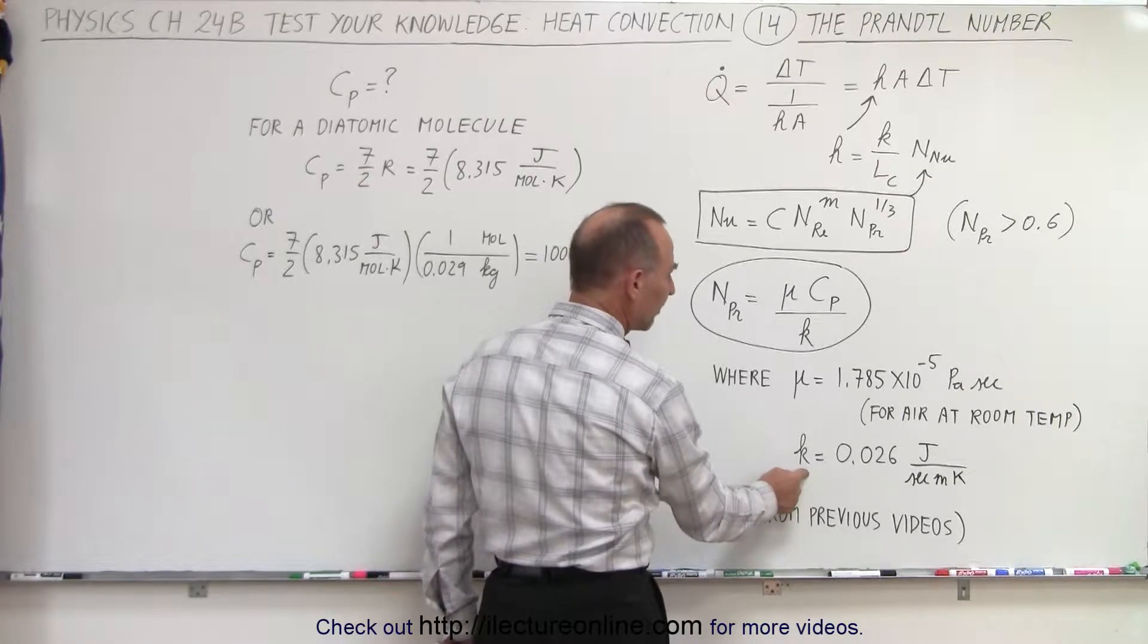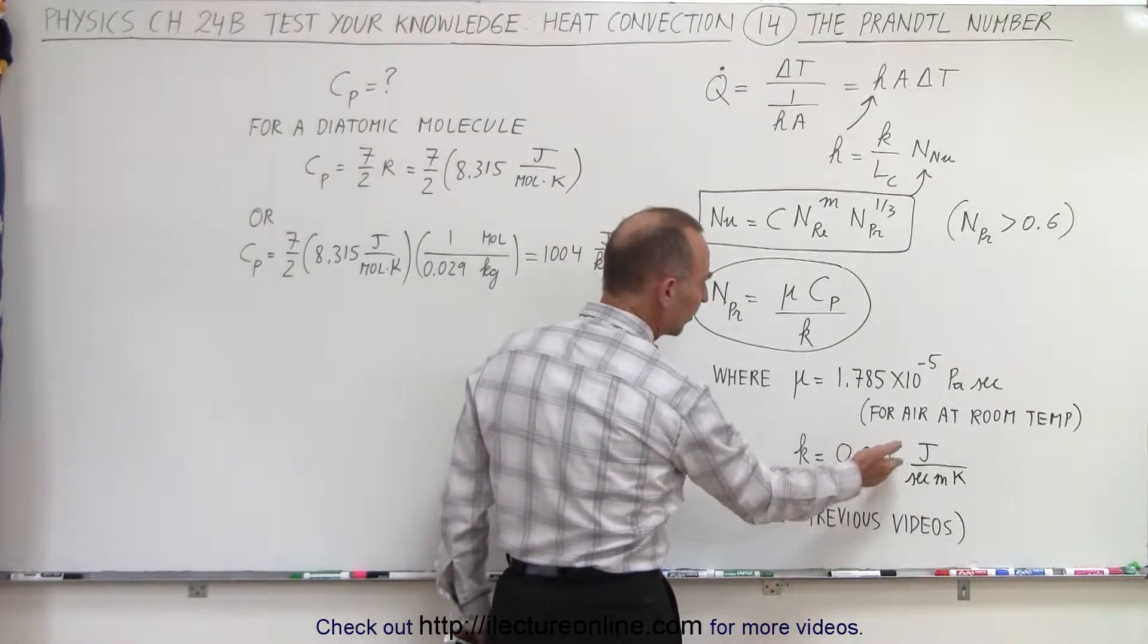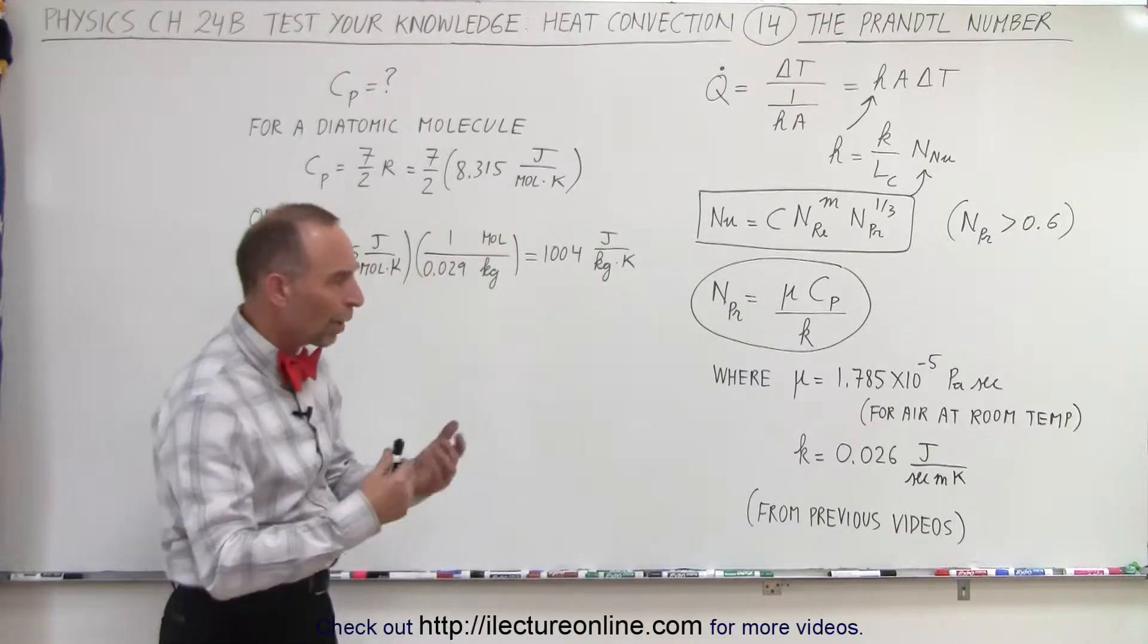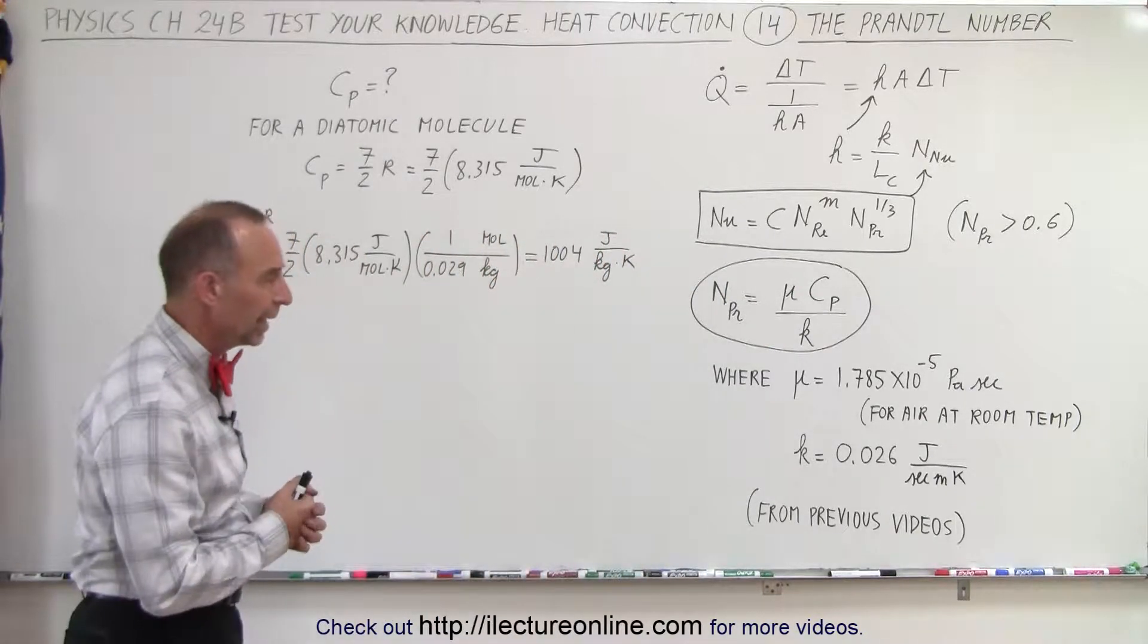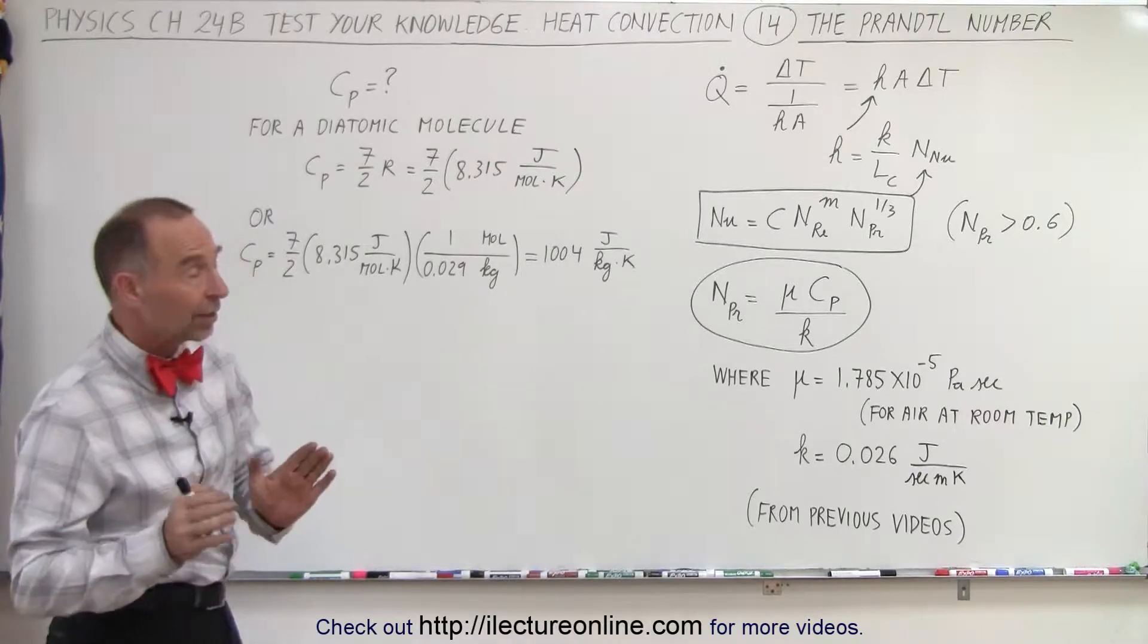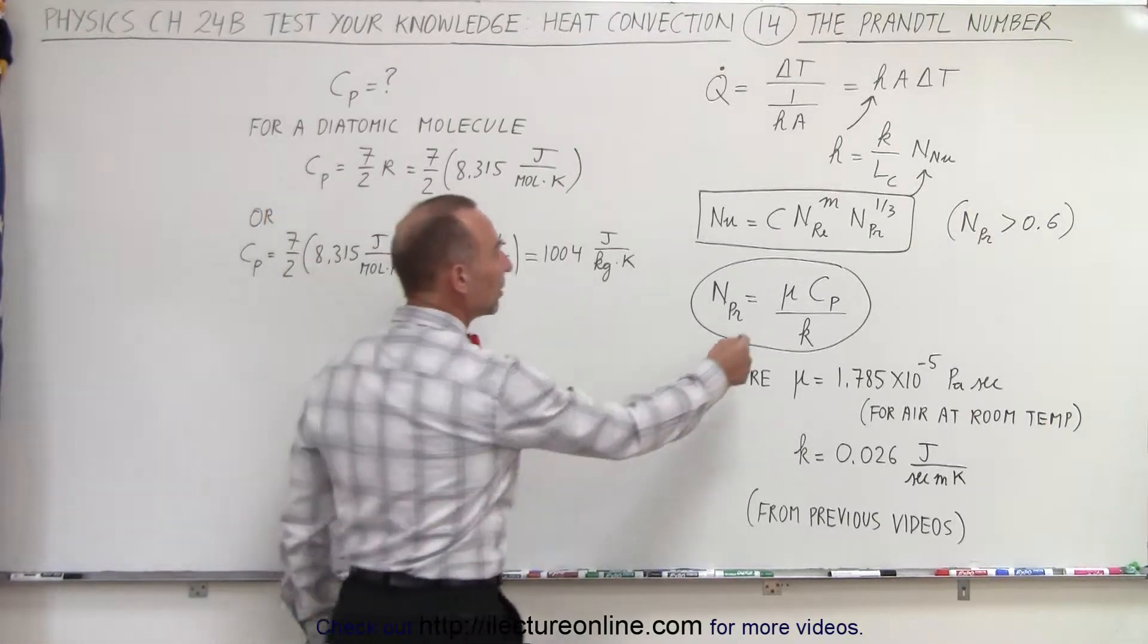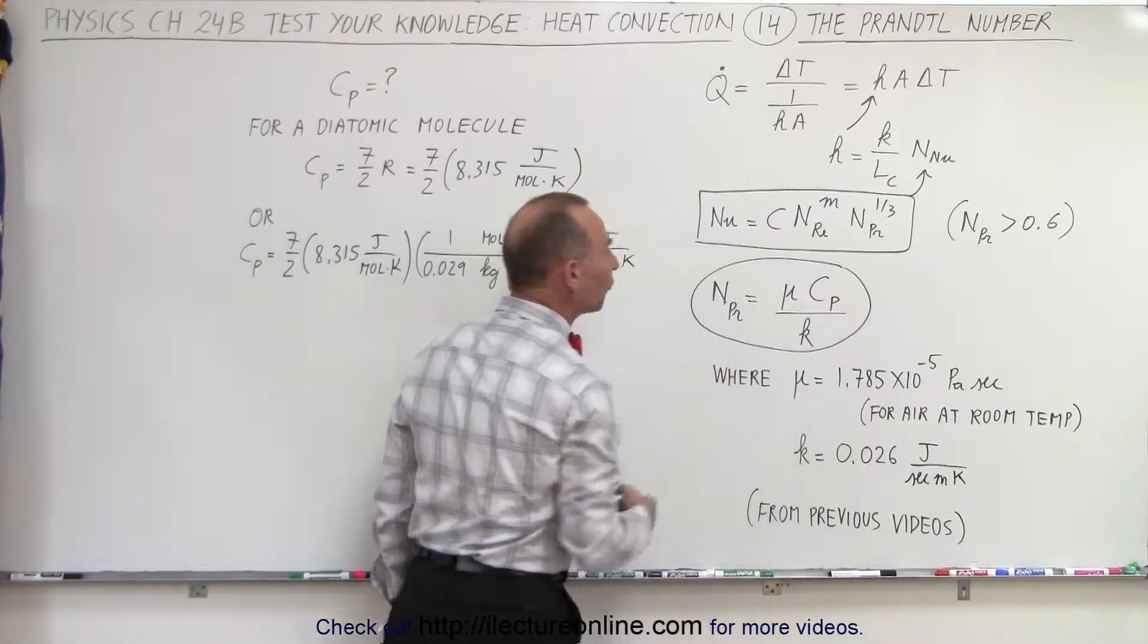And that the conductivity for air is equal to 0.026 joules per second or watts per meter per Kelvin. And we've obtained that before but now let's concentrate on how to calculate the Prandtl number. So to do that we need to calculate the specific heat for air.